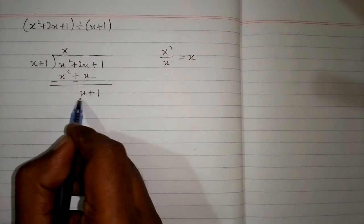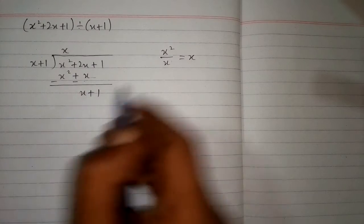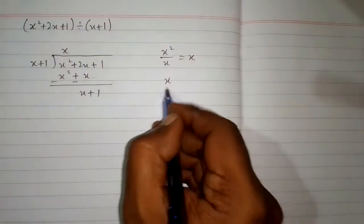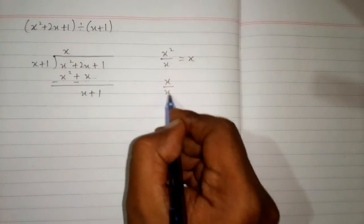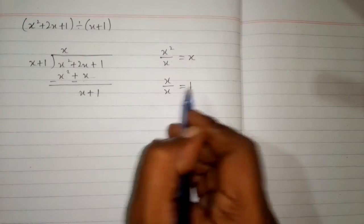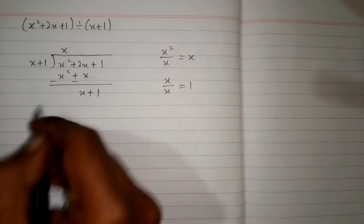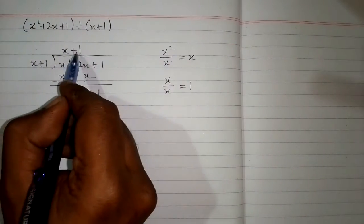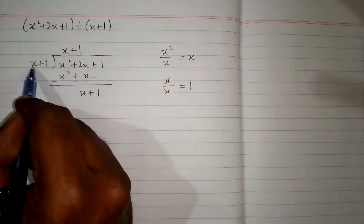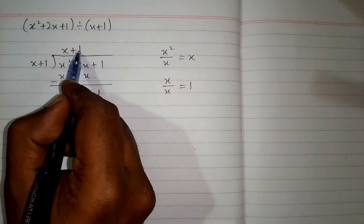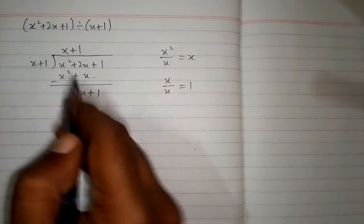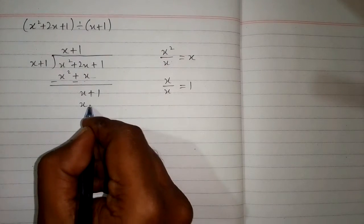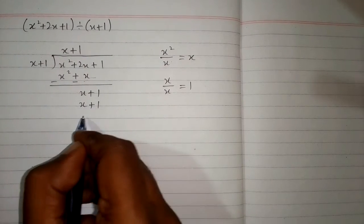Now we will take the first term of this x plus 1 and the first term of the divisor, which is also x, and x upon x is 1. So we will write this plus 1 over here and multiply x plus 1 by plus 1. So 1 multiplied by x is x, and 1 multiplied by 1 is 1.